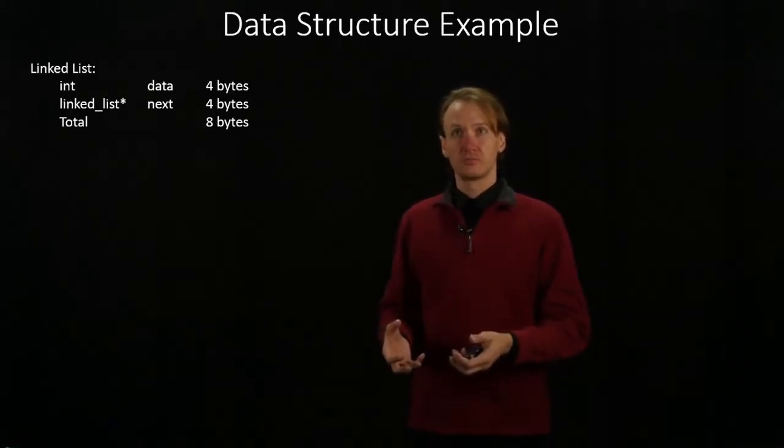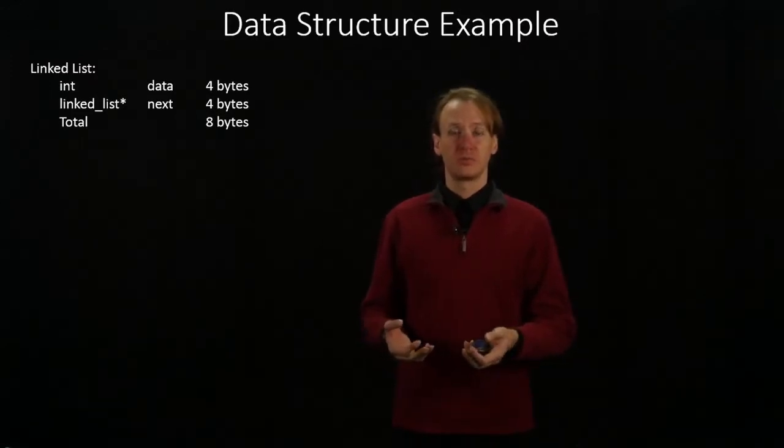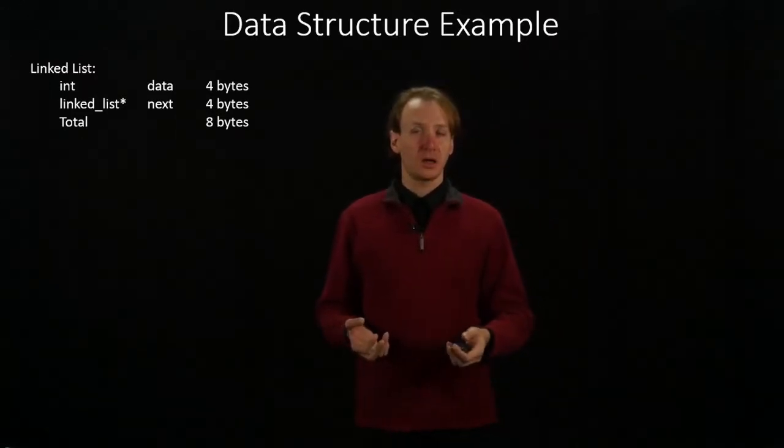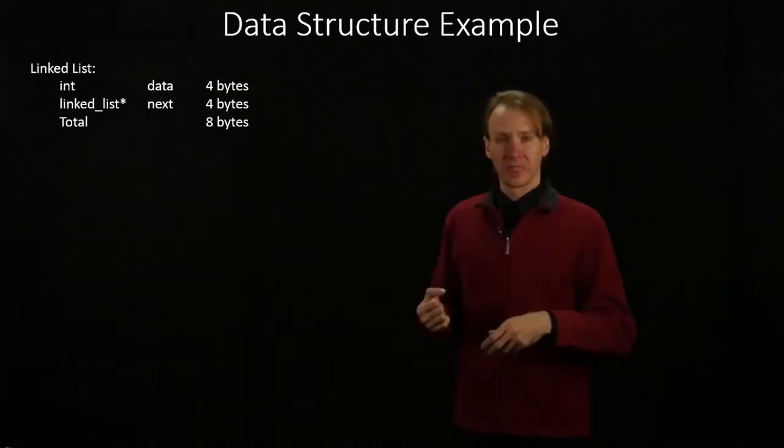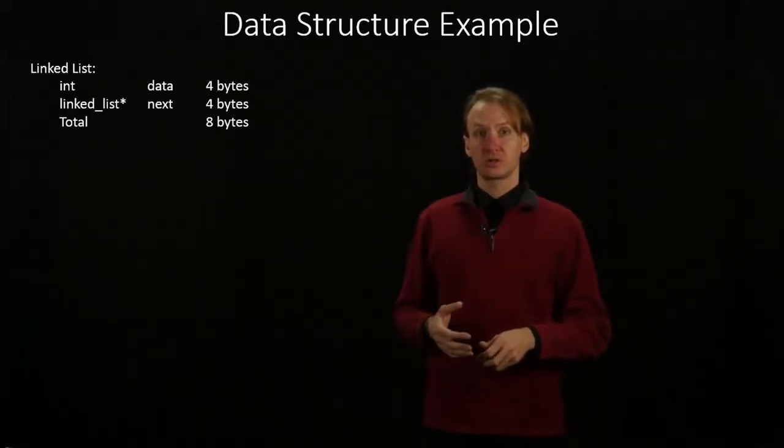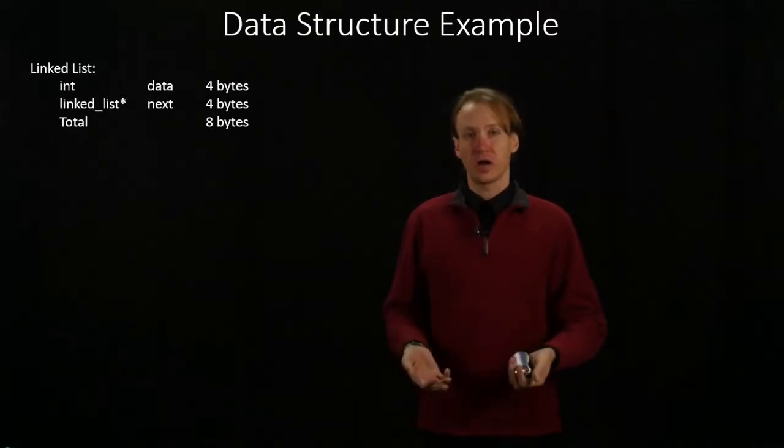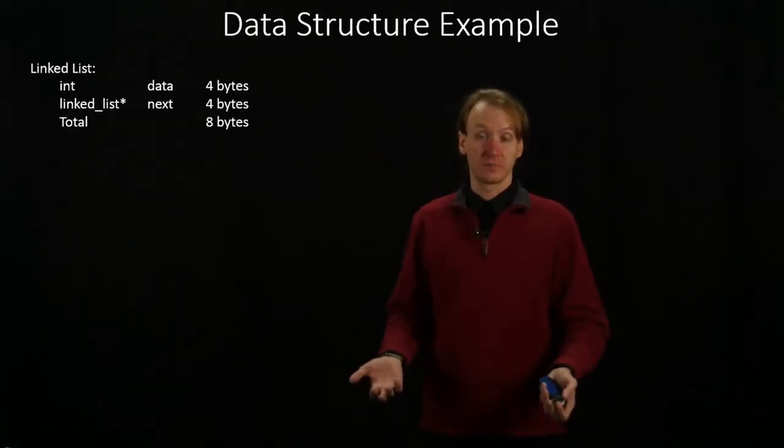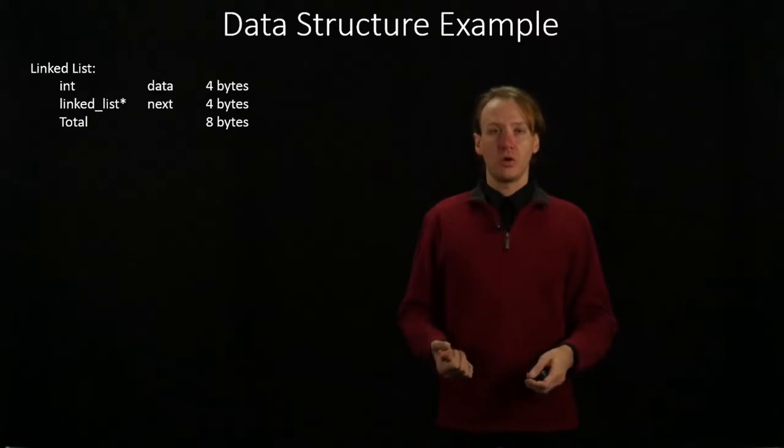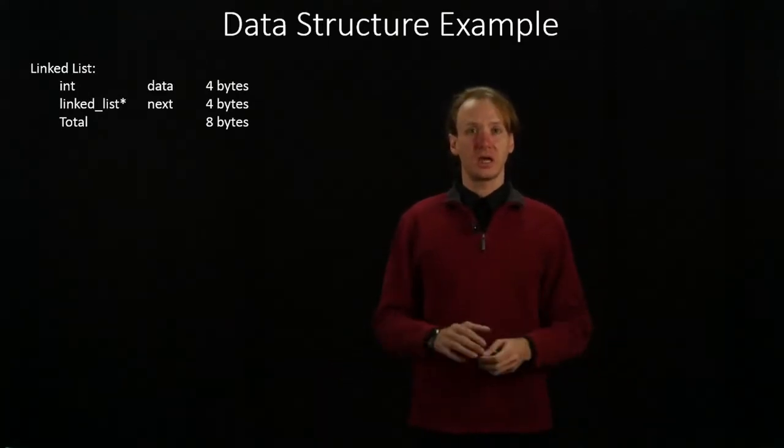An integer for some data, which would be four bytes, and a pointer to another linked list. In our case, all of our pointers are going to be four bytes. They contain some address, and all of our addresses are just four byte integers. So overall, my linked list contains eight bytes of data.